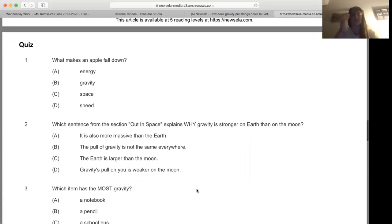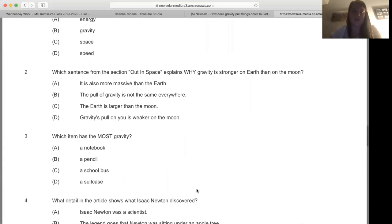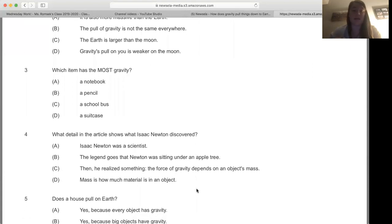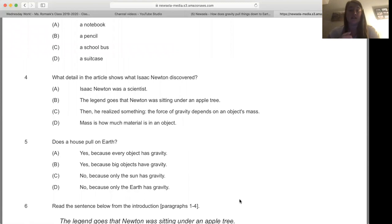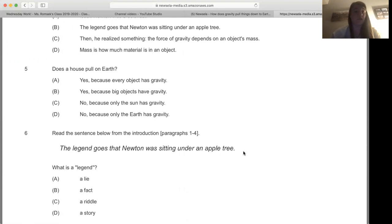And then this is the quiz. I'll just read these questions with you quickly and then you can just answer them, circle them whatever, and then post them right back on. So what makes an apple fall down? That should be easy. Which sentence from the section Out in Space, so make sure you look at that section specifically, explains why gravity is stronger on Earth than on the moon? Which item has the most gravity? So you have to look at these and decide. What detail in the article shows what Isaac Newton discovered? So I'm not asking what did he discover, but what in the article showed us that? Does a house pull on Earth?